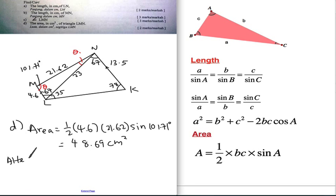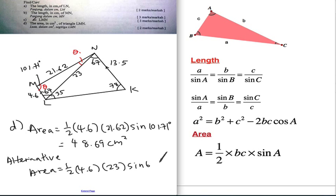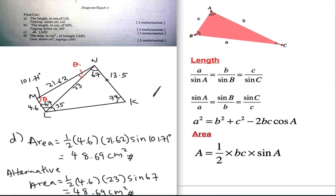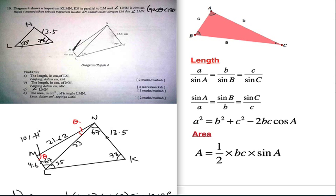As an alternative check, using the other two sides 4.6 and 23 with the angle 67 between them: 4.6 × 23 × sin 67 divided by 2 also gives 48.69 cm² — the same answer. Both sets of two sides with their included angle give you the same area. So in this chapter, solution of triangle, you have the sine rule, the cosine rule, and the area formula — all of which are important.